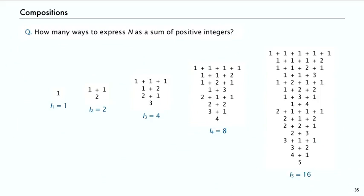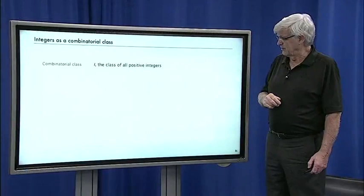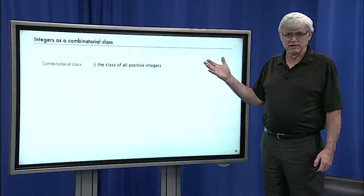And again, it's easy to guess the pattern. There's 2 to the n minus 1 ways to express n as a sum of positive integers. And that's easy to see with the symbolic method.